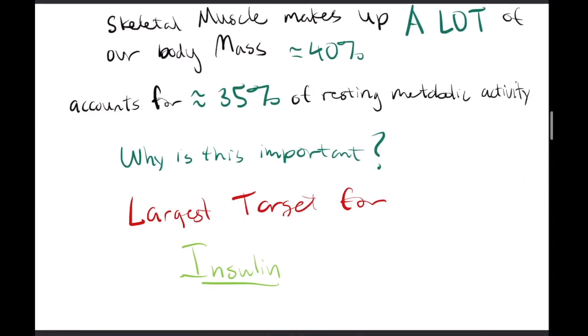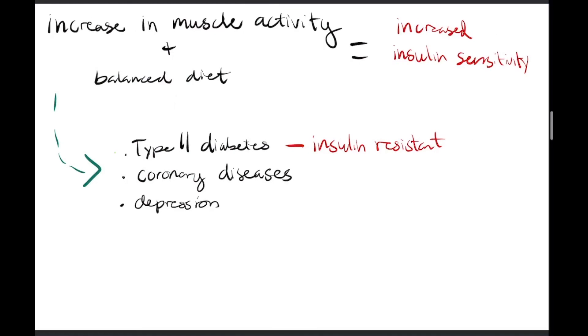Now we're going to talk about skeletal muscle. Skeletal muscle makes up approximately 40% of our body mass and accounts for approximately 35% of resting metabolic activity. This is important because skeletal muscle is the largest target for insulin, the signaling molecule in our body that helps regulate glucose levels. We find that increase in muscle activity, exercise coupled with a balanced diet, will increase insulin sensitivity. If you're sensitive to insulin, your body is able to use blood glucose more efficiently than if it was insulin resistant, like a type 2 diabetic would be.